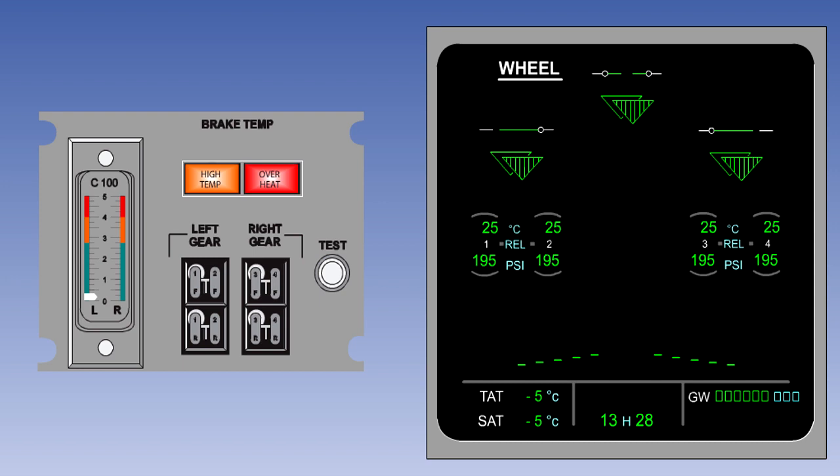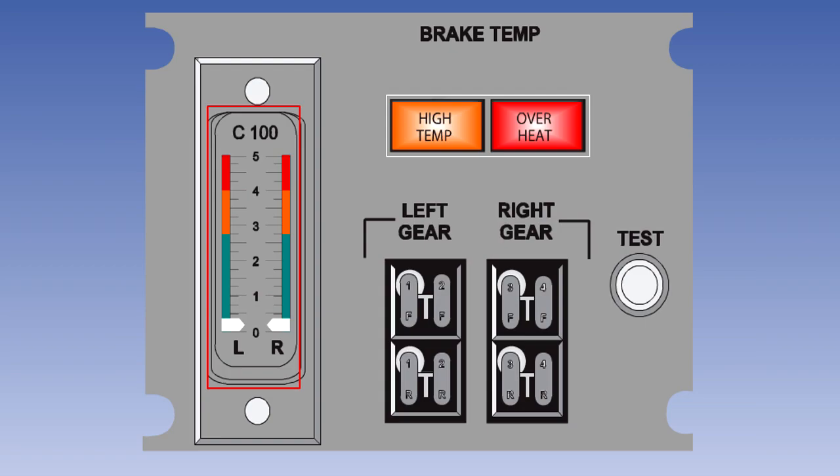Many aircraft are fitted with brake temperature indicators. Older aircraft have electromechanical indicators. While on more modern aircraft, the temperatures can be displayed on one of the electronic display screens. Sensors are arranged to sample the temperature of the brakes of each individual wheel, and their output is sent to the indicator panel. Here, you can see a system typical of that used on many older aircraft.